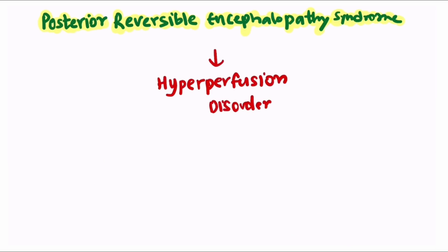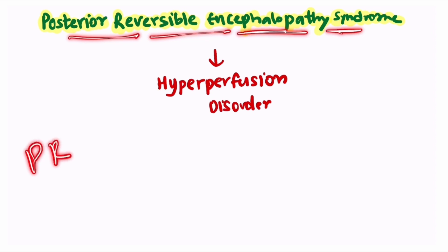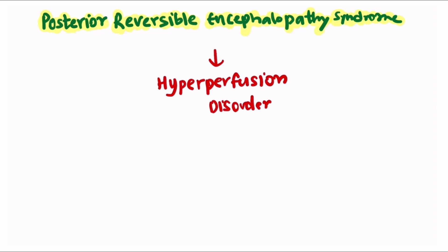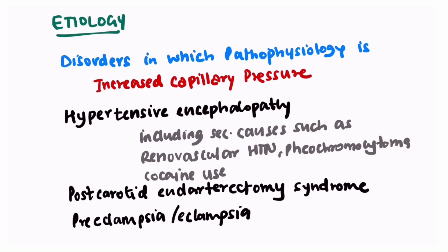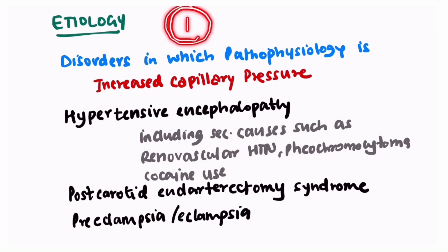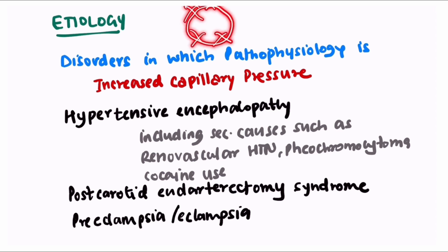Now let us come to the actual topic — Posterior Reversible Encephalopathy Syndrome, i.e., PRESS. It is basically a hyperperfusion disorder. There are two main pathophysiological processes by which PRESS syndrome can occur: the first is increase in capillary pressure, and the other is endothelial dysfunction.